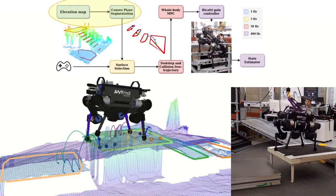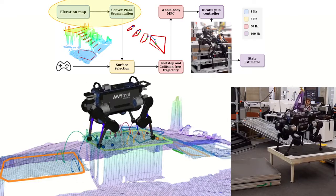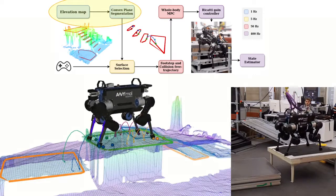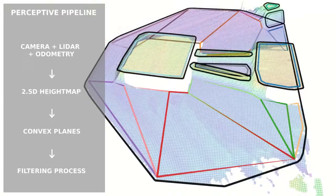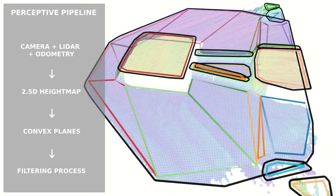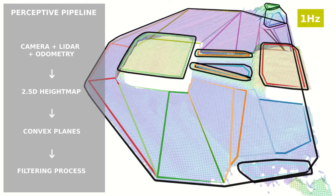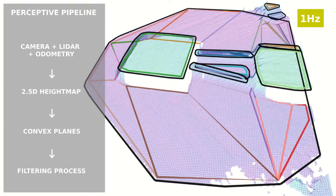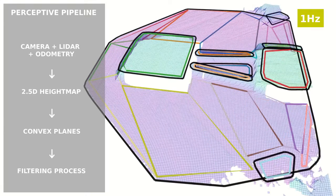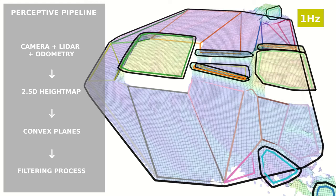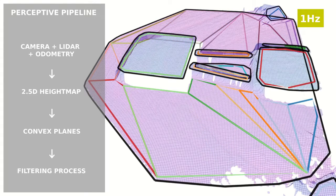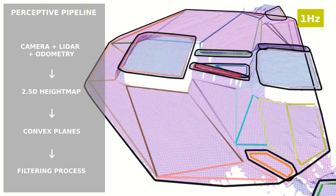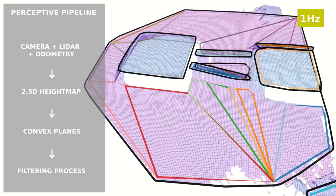We will now review the different components starting with the perception. Regarding the perception system, here is an example of how terrain elevation is filtered in real time. From the heat map and the initial convex planes — the lines in black on the video — we extract new convex planes that are safe to walk on, shown as colored lines in the video. This entire process runs at 1 Hz.